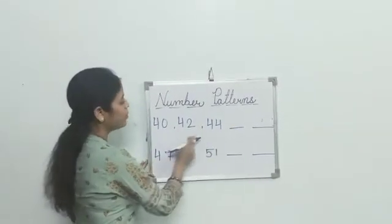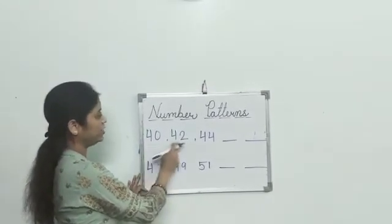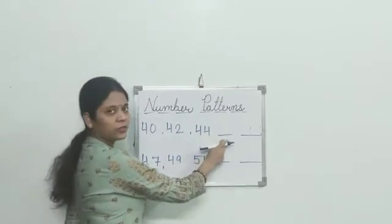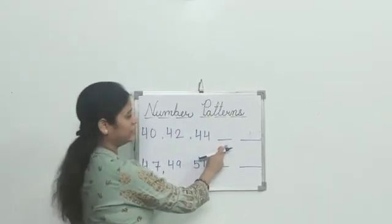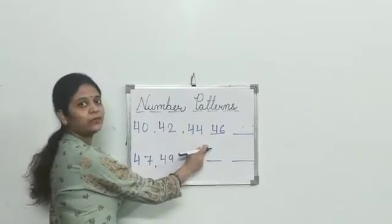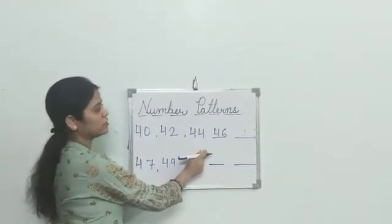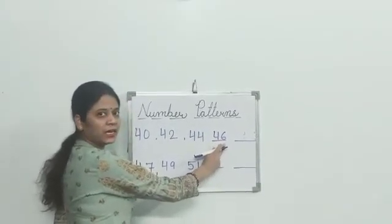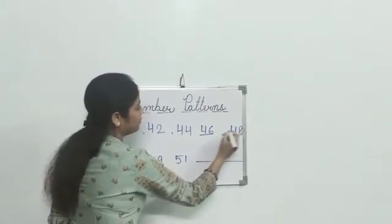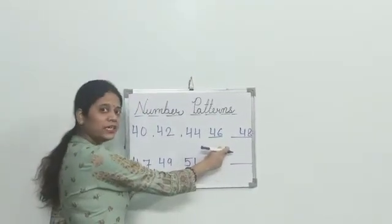Now let's do some more exercise. Numbers 40, 42 and 44. Now tell me the answer. Yes — 46. Which number did we skip? 45. We skipped 45 and wrote 46. Then which number? Yes, 48. We skipped 47 here.